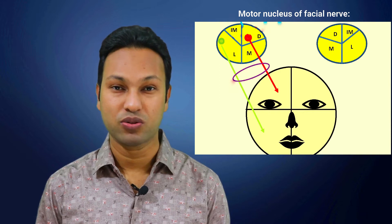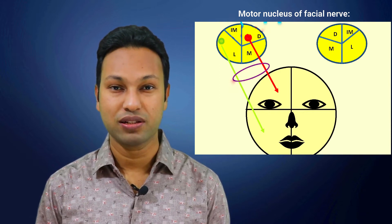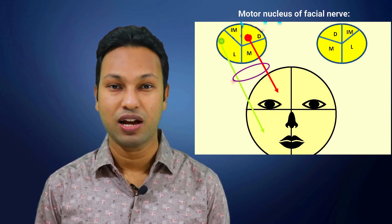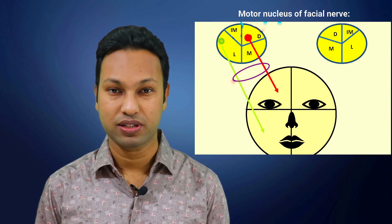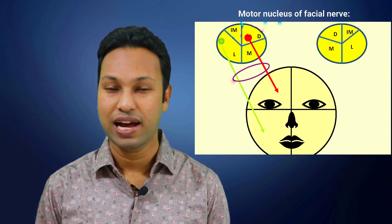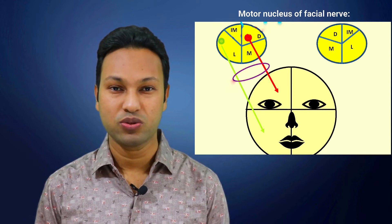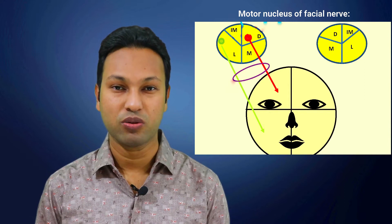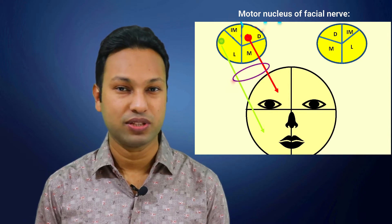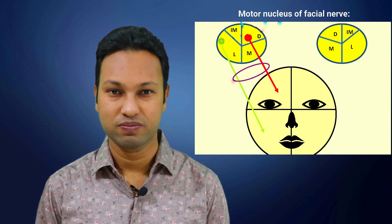The supranucleus, or upper part of the motor nucleus of the facial nerve, controls the facial muscles of the upper half of the same side. The infranucleus controls the facial muscles of the lower half of the same side.